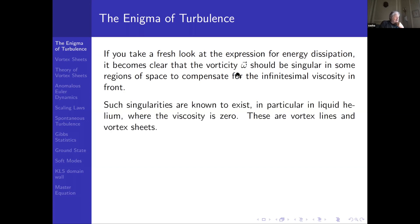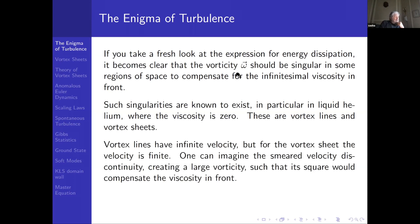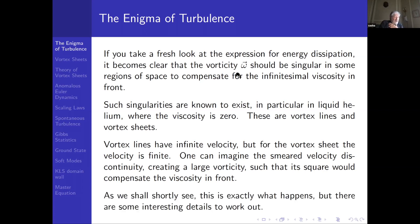Such singularities are known to exist, in particular in liquid helium where the viscosity is zero. These are vortex lines and vortex sheets. Vortex lines have infinite velocity, which is too much here, but vortex sheets have finite velocity — just discontinuous. There is a tangent discontinuity, which was mentioned in the previous talk. One can imagine the smeared velocity discontinuity creating large vorticity such that its square would compensate for the viscosity in front. And as we shall shortly see, that's exactly what happens.